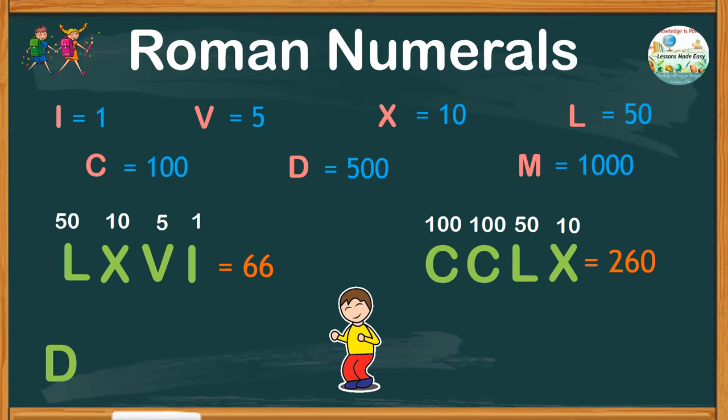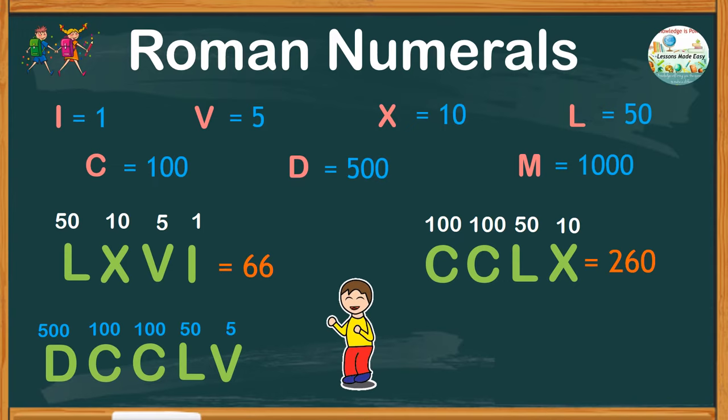What about D, C, C, C, L, V? D is for 500, two Cs for 100 each, L is 50, V is 5, and altogether we have 755.